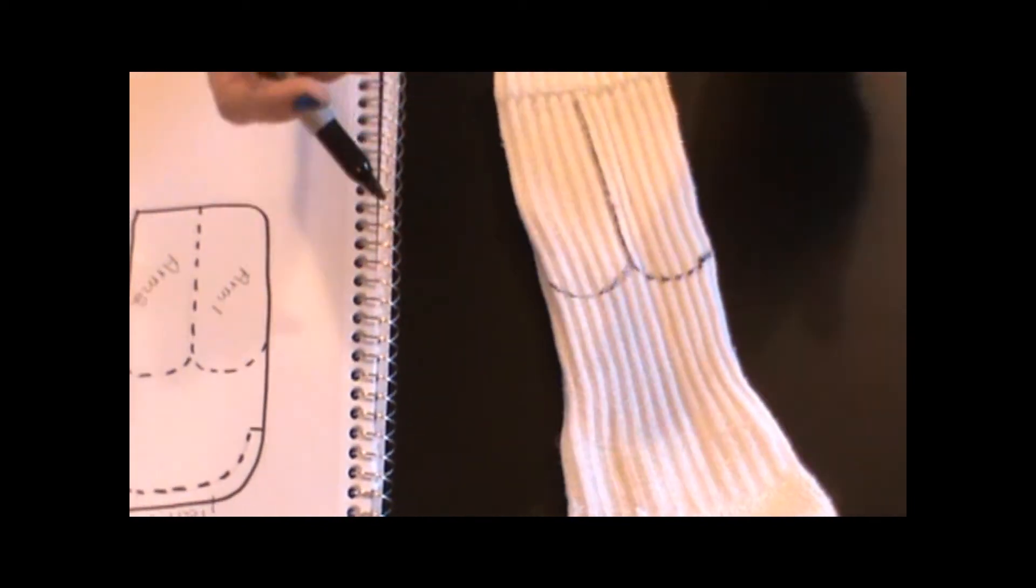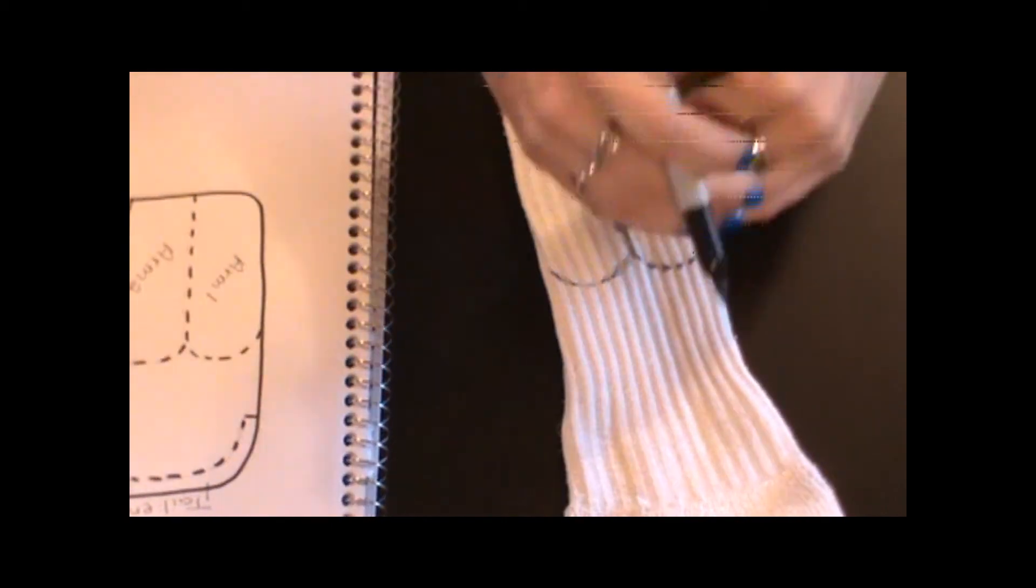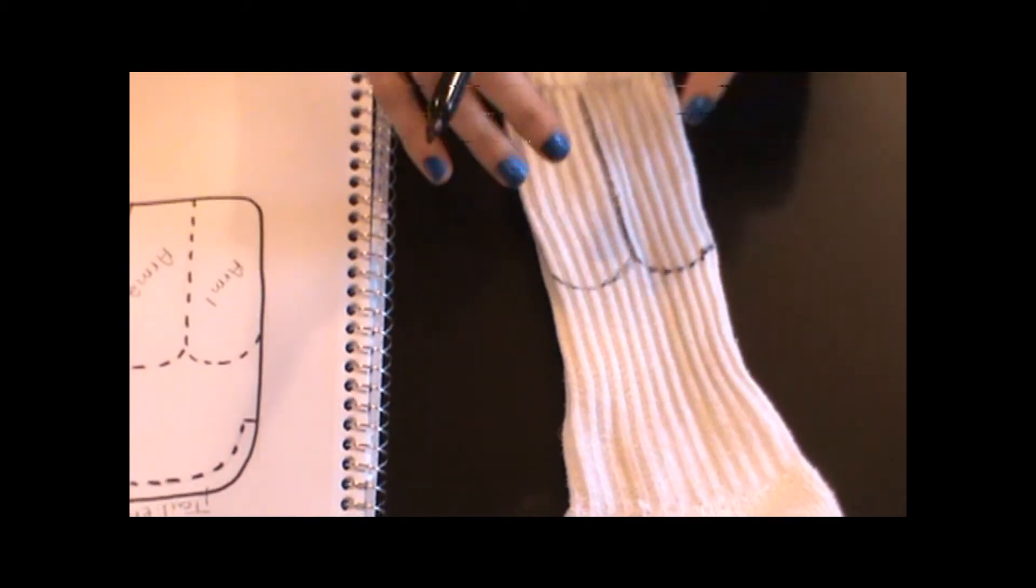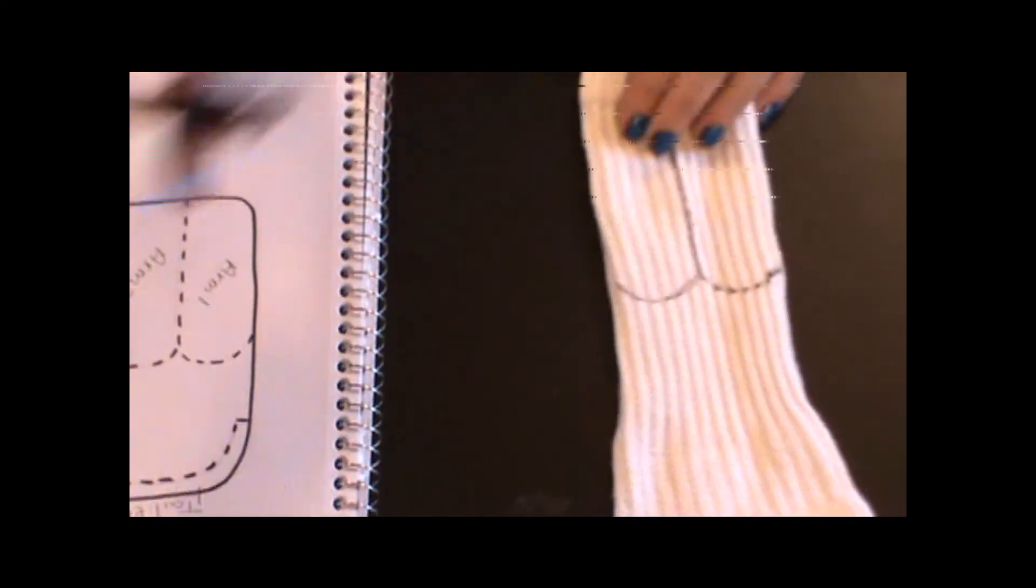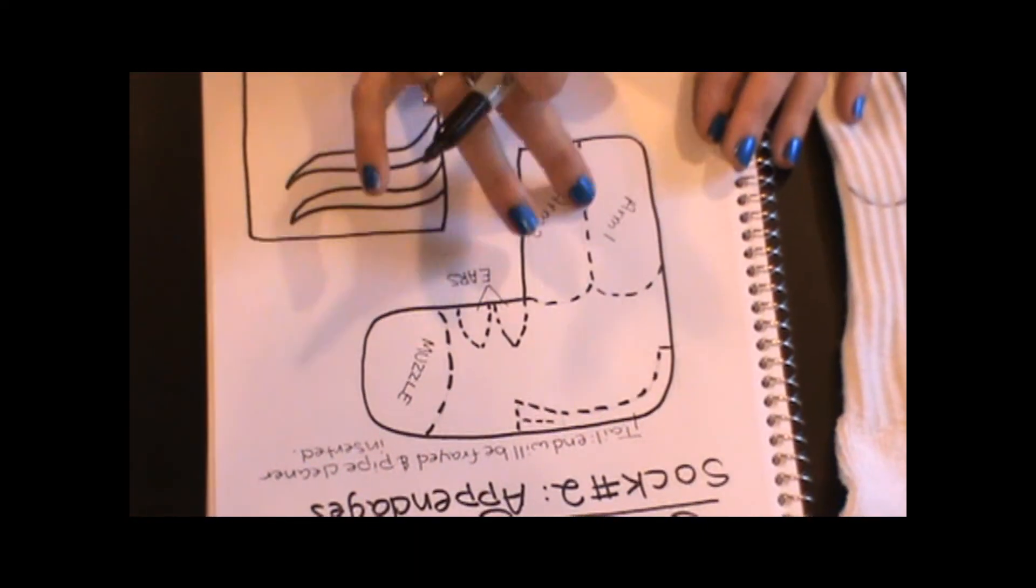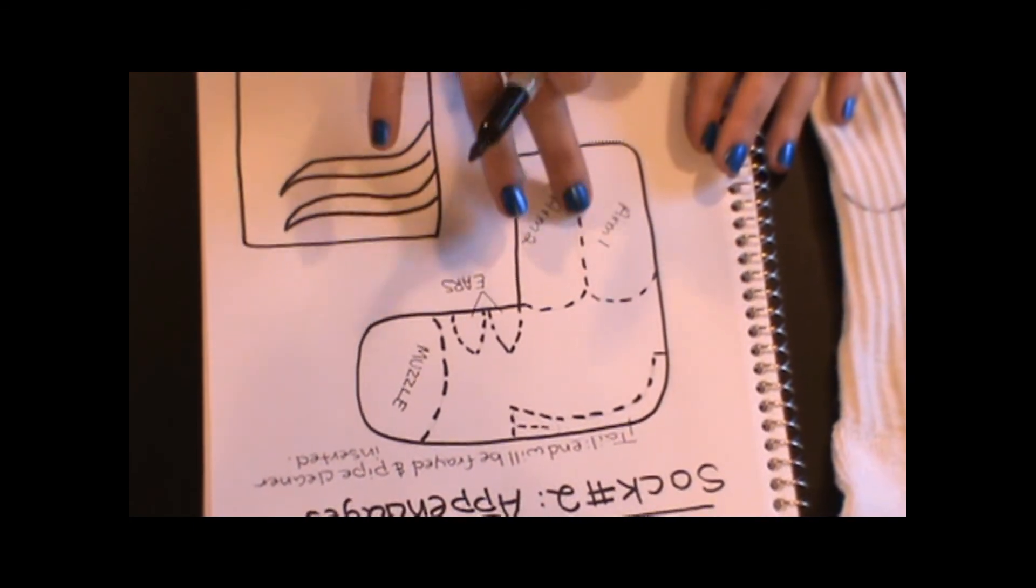I've curved them because I want curved hands. If you don't want curved hands, you can draw a straight line and just cut it straight. So when I'm drawing on my pattern, I mean on my actual sock, I'm just using a straight line. But when I've drawn it on the piece of paper, I've shown that it's dotted.